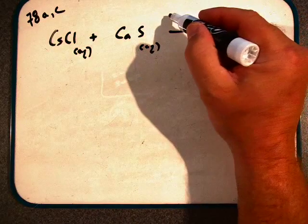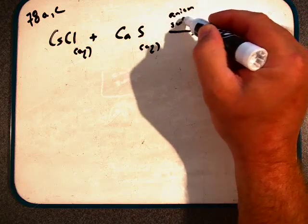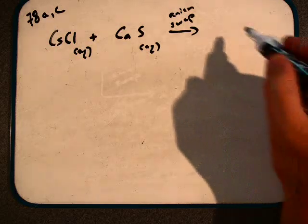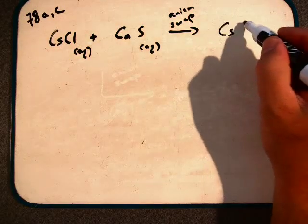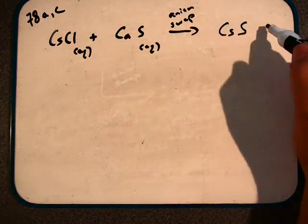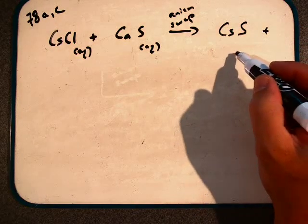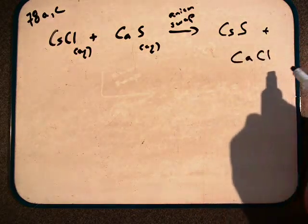Again, to predict, we just want to swap our anions. We would get cesium sulfide as one product and calcium chloride as another.